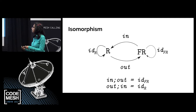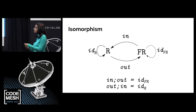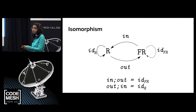We've got our recursive type R — that's our list — and we've got some other type F(R) — that's our ListF. I've written functions `in` that go from `ListF(List)` to `List`, and `out` which go from `List` to `ListF(List)`. These two functions are such that if I compose them — if I go `in` and then `out` — that's just the same as id, because I haven't done anything. And going `out` then `in` is also the same as id.